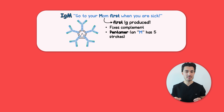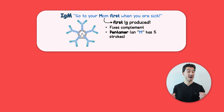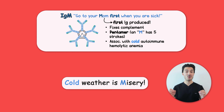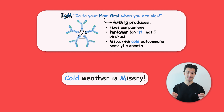Because it's a pentamer, IgM has the greatest avidity and number of binding sites. It's also associated with cold autoimmune hemolytic anemia — and you'll remember that cold weather is misery. Now that we have the basics down, let's tie in a key pathology you need to know for testing: hyper IgM syndrome.